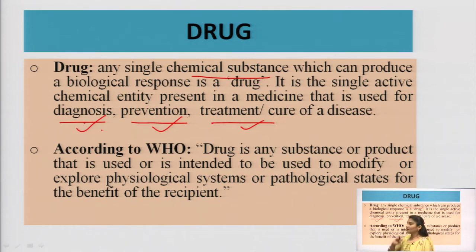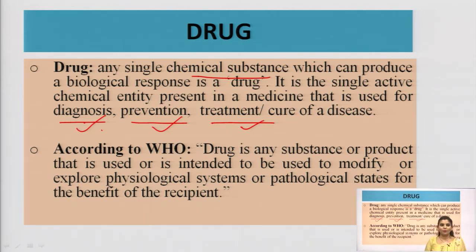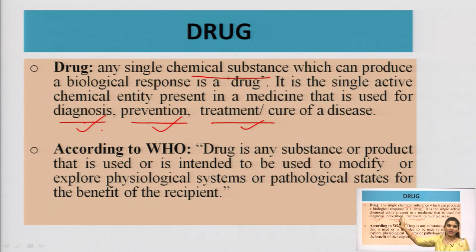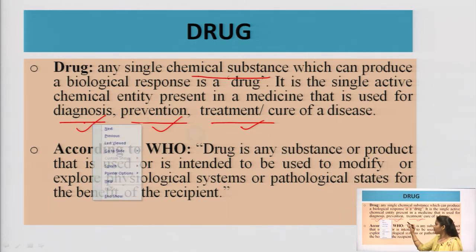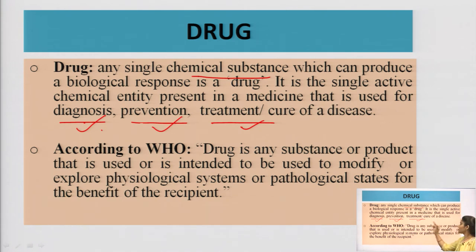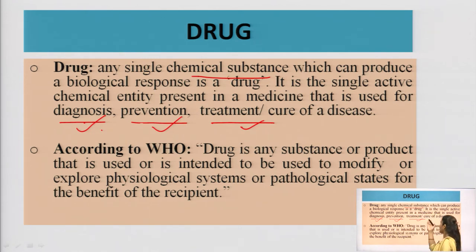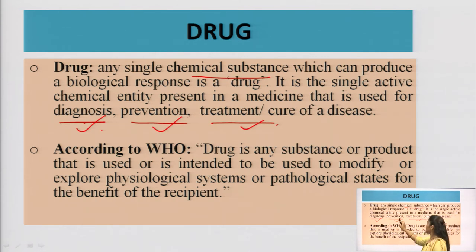Prevention — the simplest example of prevention is a vaccine. People who have not even contracted COVID are still getting vaccinated for the purpose of prevention. So vaccines are drugs and the purpose of these drugs is prevention — to prevent you from that disease. Treatment — whenever we take any drug, our motive is that we are suffering from a disease and we want the drug to cure it or provide treatment. So any chemical substance that fulfills these three factors — diagnosis, prevention, and treatment — is known as a drug.